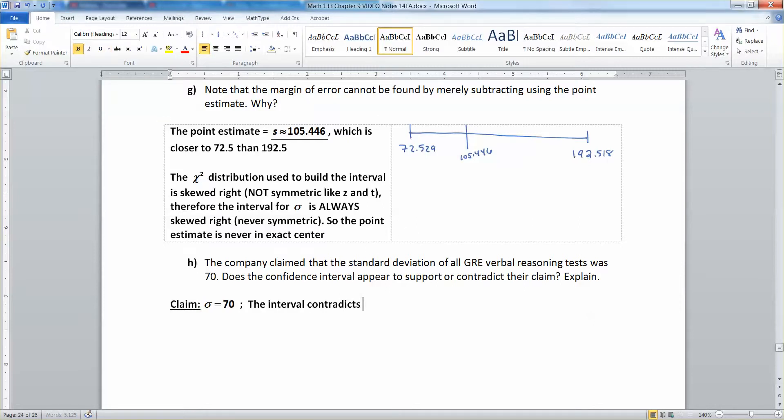And just for the record, by the way, when we ask questions like this, don't answer yes. Support or contradict is not a yes or no question. You have to choose support or contradict. It contradicts the company's claim because 70 is outside or below the entire interval.